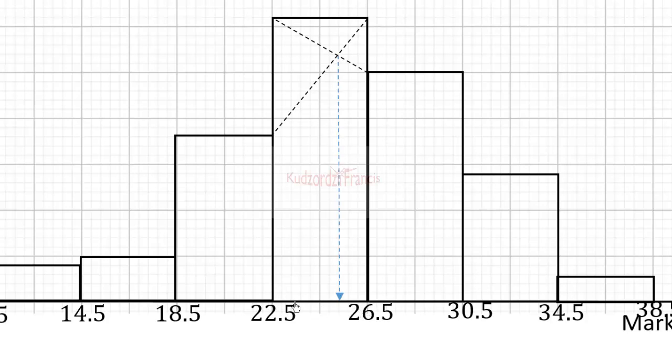The interval here is 4. 26.5 minus 22.5 is 4, so it means each of the boxes is 0.4. So multiply 7 by 0.4 and add it to 22.5. So 7 times 0.4 plus 22.5 will give you 25.3.